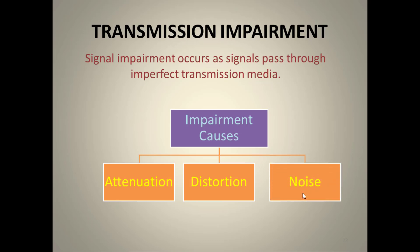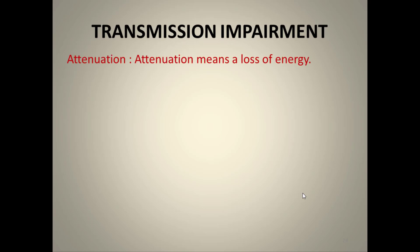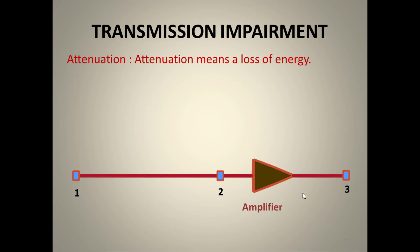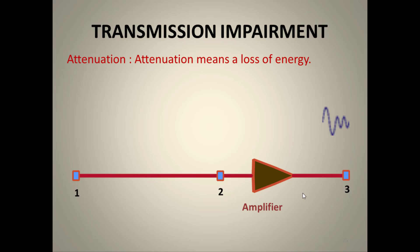Attenuation means loss of energy. As a signal travels from point 1 to point 2, it loses energy passing through air or wire, so its amplitude decreases greatly. To send the signal further to point 3, an amplifier or regenerator is needed to compensate for the energy loss. Without amplification, the signal may not be received at the destination.